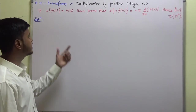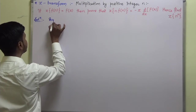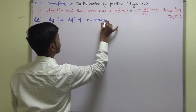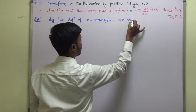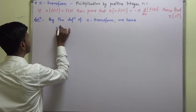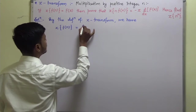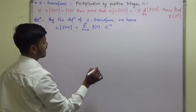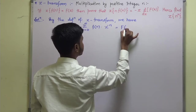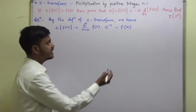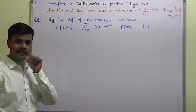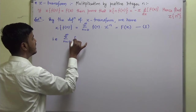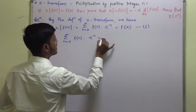We are going to start with the definition. By the definition of Z transform, we have Z transform of f(n) is equal to summation from n=0 to infinity of f(n) into z to the power minus n, and we are given that this equals F(z). We can call this equation 1. So I can write: summation from n=0 to infinity of f(n) into z to the power minus n equals F(z).